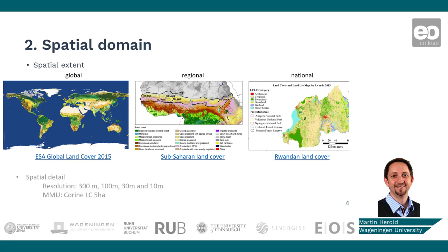The second aspect related to the spatial domain is the spatial resolution or the minimum mapping unit — that is, what level of spatial detail the map provides. Maps range in resolution from kilometers to a couple of hundred meters, to 30 or even 10 meters, or minimum mapping units such as 25 or 5 hectares in the case of CORINE as a European land cover initiative. The trend is that higher resolution land cover maps are becoming more and more available and popular. The first global land cover dataset at 10 meter resolution using ESA's Sentinel data was released in 2021.